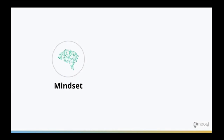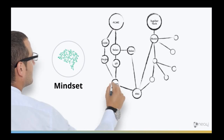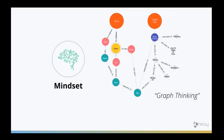The graph mindset — what is that all about? The whiteboard model is the physical model. What a business person will draw up on a whiteboard when talking about their business problem is the same thing that is coded by the developer, designed by the architect, and stored by the database — in memory and on disk. We are all thinking about graphs in the same structure without any translations in between. It's a much more natural way of thinking about your data. You don't typically go to a whiteboard and draw tables, columns, rows, foreign key relationships, or ER diagrams — but you do draw what is essentially a graph.